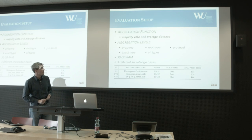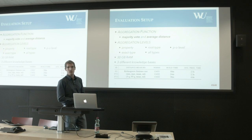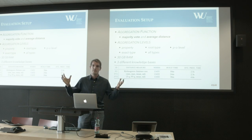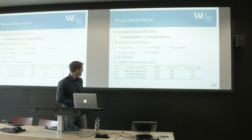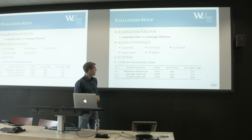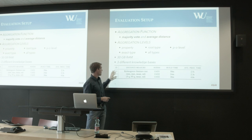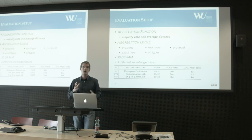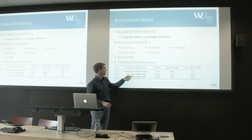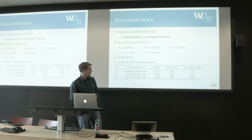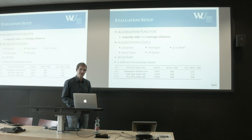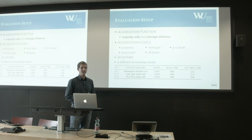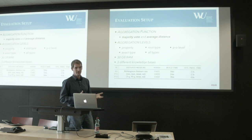Our aggregation functions were majority vote and average distance vote — you take the distances for all property-height nodes, build the average, and rank based on that. We used a 30GB RAM server. Prediction time for a set of numerical values is 2.5 seconds, which is actually slow, but we did not optimize the system or apply any k-nearest search optimizations yet.